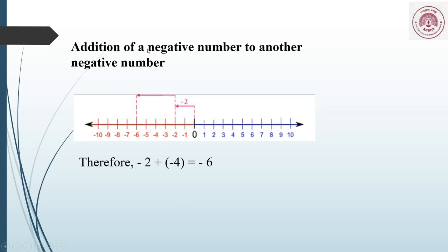Now the addition of a negative number to another negative number. The steps are the same — we first locate the first number, which is minus 2. The question is minus 2 plus minus 4. We have to move 4 steps to the left, because we are adding a negative number: 1, 2, 3, and 4. We reach minus 6, so minus 2 plus minus 4 is minus 6.